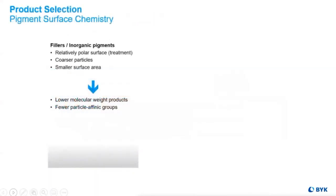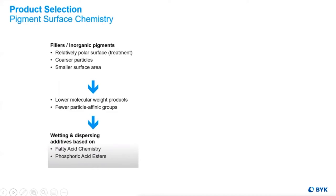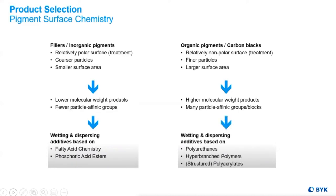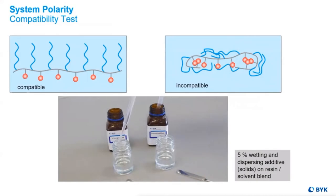Remember that these historic additives still have their place in the sun. The selection process should be based on the pigments and the coatings needs. Inorganic pigments are large in particle size with small surface areas; therefore, monofunctional additives like fatty acid chemistries are best suited for those purposes. Since organics and carbon black are literally the opposite of inorganics in terms of size and surface chemistry, fatty acid chemistries are probably not best suited for those choices.